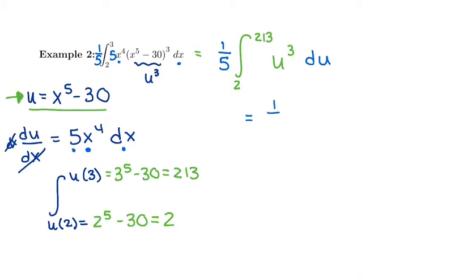Now we are ready to integrate. I'm going to keep the 1/5th and I'm going to add 1. So I'm going to get 1 over 4 u to the 4th and instead of plus k I'm going to use an evaluation bar from 2 to 213.